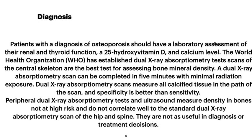The diagnosis of osteoporosis should include laboratory assessment of renal and thyroid function, 25-hydroxyvitamin D, and calcium levels. The World Health Organization has established dual X-ray absorptiometry (DXA) scan of the central skeleton as the best test for assessing bone mineral density. DXA scans can be completed in five minutes with minimal radiation exposure and measure all calcified tissue in the scan path, with specificity better than sensitivity. Peripheral DXA and ultrasound measures of bone density do not correlate well with standard DXA scans of the hip and spine, and are not as useful in diagnosis or treatment.